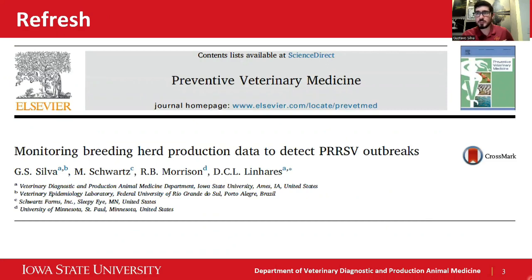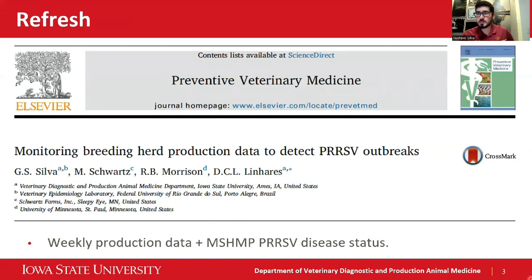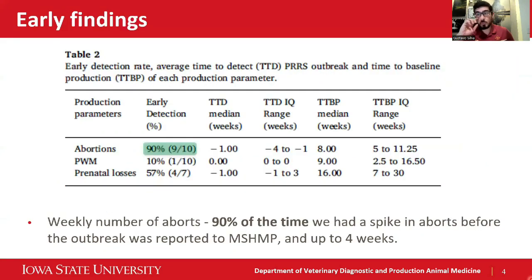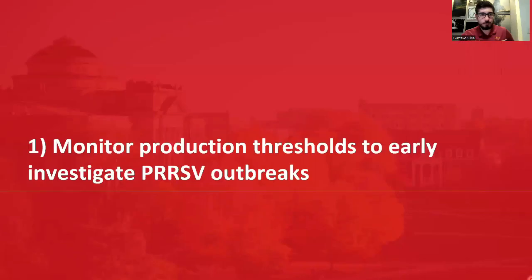For those not aware of this research we did in the past: we monitored on a weekly basis production data and matched it to PRRS disease status. Key highlights from that work were that abortions was very sensitive — 90% of the time it was able to detect compared to when the farm reported the PRRS outbreak, and that early detection can be as early as up to four weeks. When the farm was using pre-weaning mortality, we found that prenatal losses were not sensitive enough.